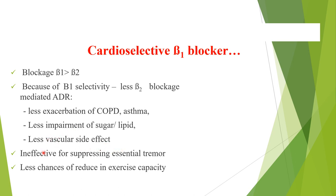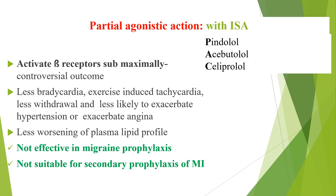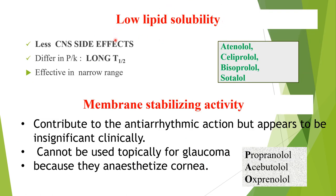Regarding partial agonist action of beta blockers with intrinsic sympathomimetic activity (ISA) — like pindolol, subitolol, and celiprolol — these are beta blockers but with partial agonistic action at receptors. They submaximally activate beta receptors with controversial but reportedly less bradycardia, less exercise-induced tachycardia, less withdrawal symptoms, and less exacerbation of hypertension and angina.